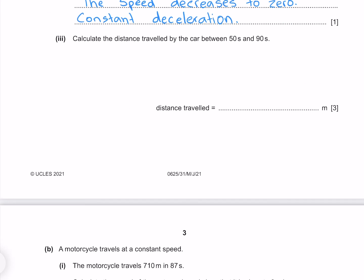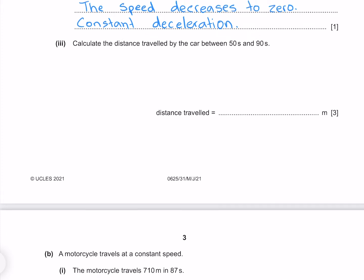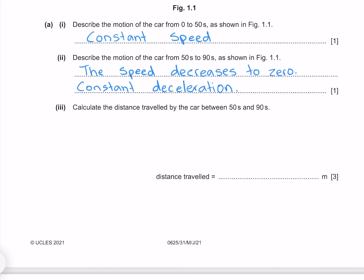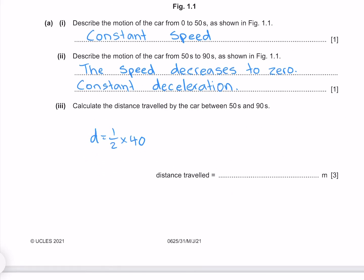Calculate the distance travelled by the car between 50 seconds and 90 seconds. The distance travelled is going to be the area underneath our graph. The area here is going to be base times height, but we see we have a triangle, so it's going to be half base times height. Where our base is 40 seconds and our height is 6 metres per second, which gives me 120 metres.